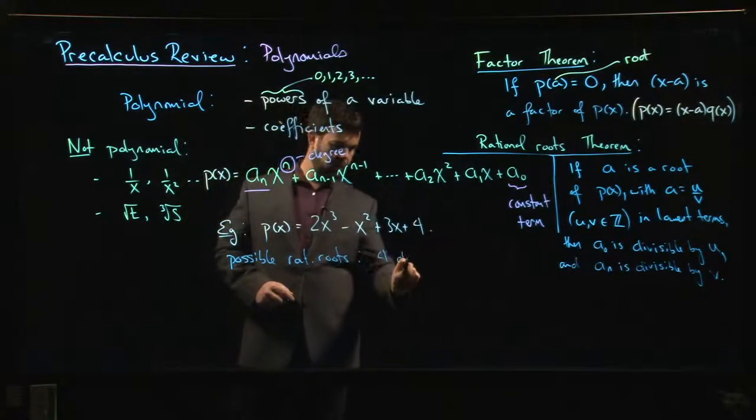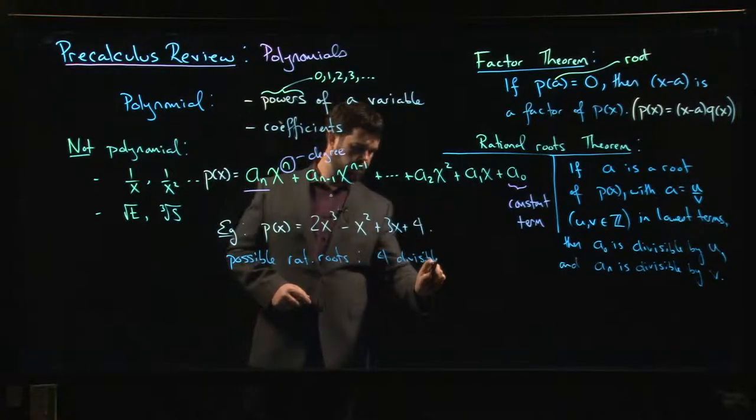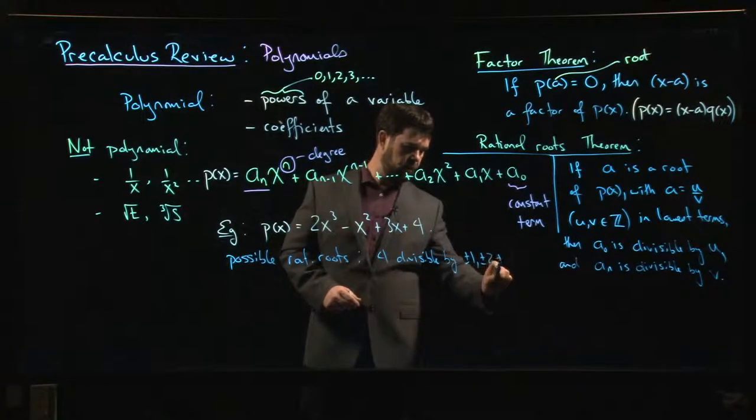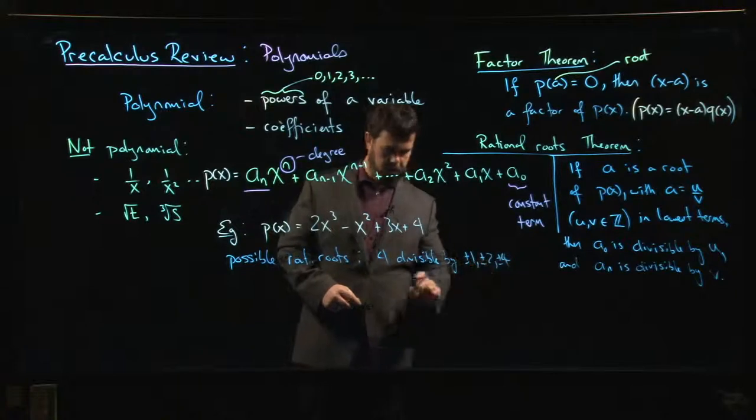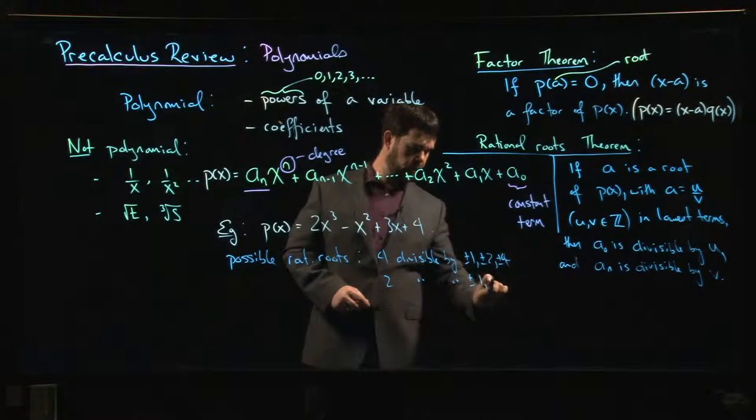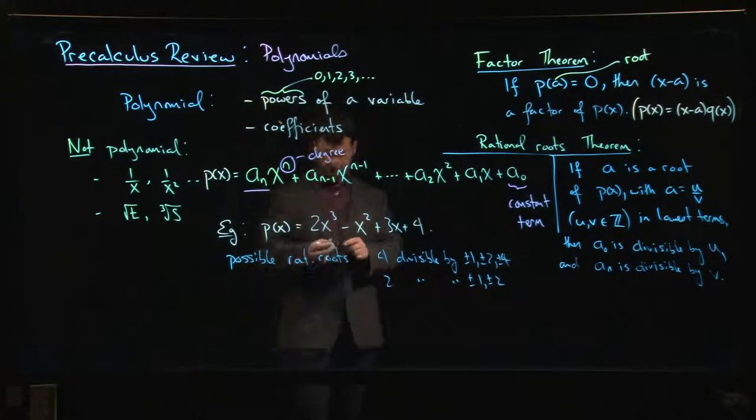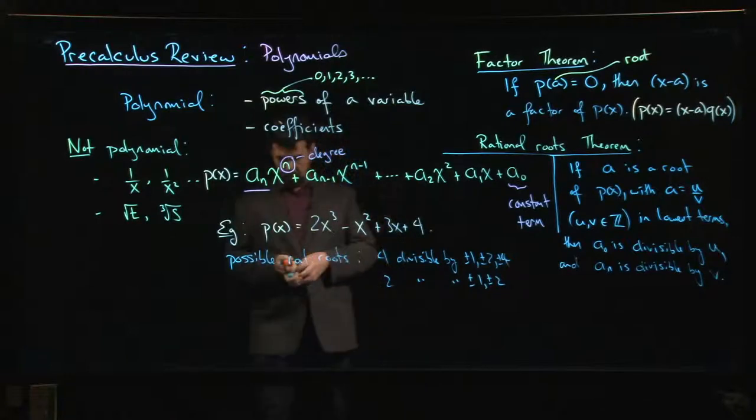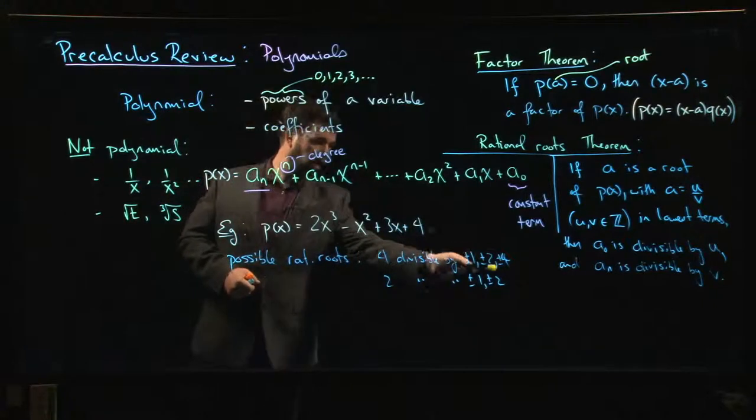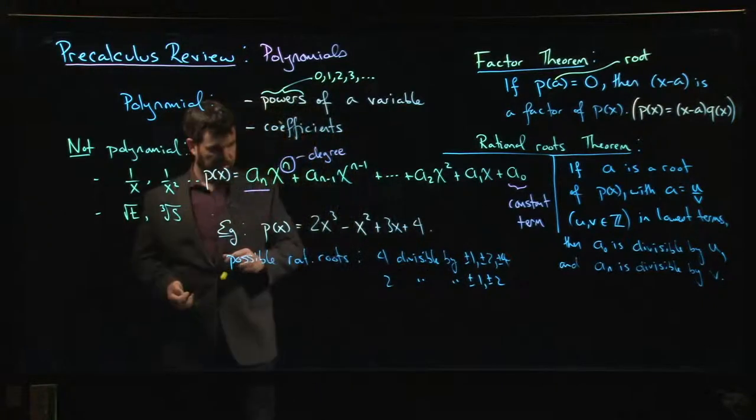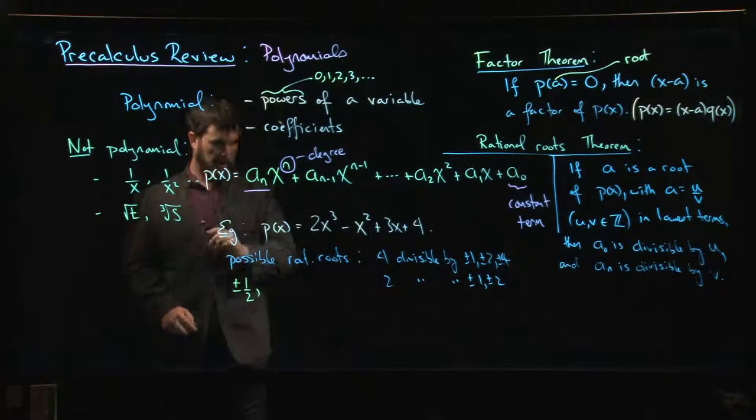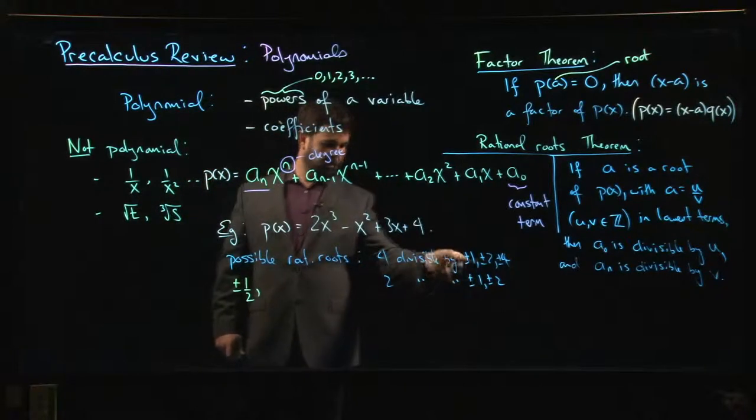So possible rational roots. What are they? Well, we know that 4 is divisible by ±1, ±2, ±4. And 2 is divisible by ±1, ±2. So that means the possible roots, the ones that you would consider, are going to be: I could take ±1 divided by ±2, so I could have ±1/2. I could have ±1 over ±1, so ±1. Those are possibilities.